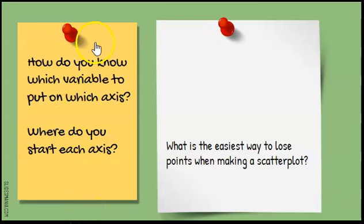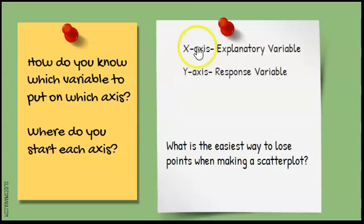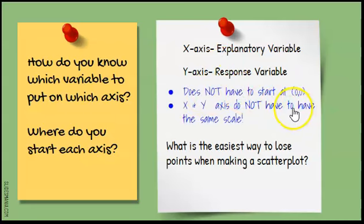How do you know which variable to put on which axis? The x-axis will have the explanatory variable. The y-axis will have the response variable. I remember this because x-axis goes with explanatory. And when you build your axis, you don't have to start at zero, zero.